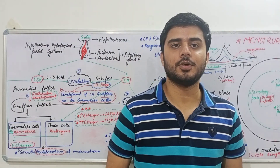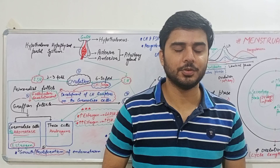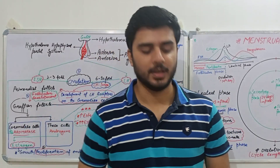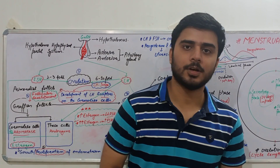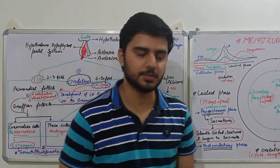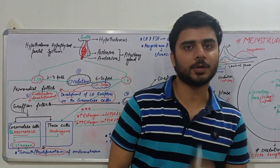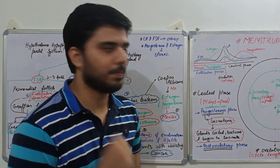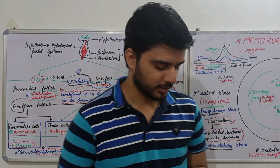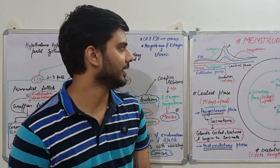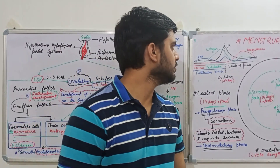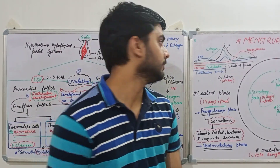Hello everyone, thank you for your response to my previous video. In this video we'll be discussing the female reproductive system. The female reproductive system is quite complex compared to the male reproductive system. It is divided into four parts: the menstrual cycle, pregnancy, parturition, and lactation. We're beginning with the menstrual cycle, and in further lectures we'll discuss the other phases.